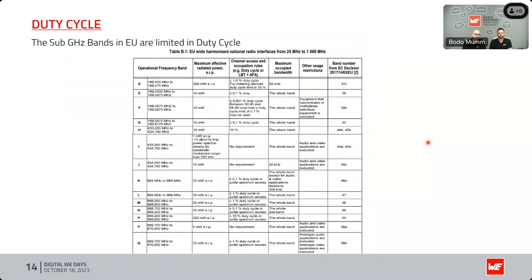Important to know: in the EU, the sub-GHz bands are limited in duty cycle. That means it is not allowed to transmit permanently or at 100% on a radio channel. This is important for developers to consider when choosing sub-GHz frequencies for their end device. They need to know which transmit power is allowed, which duty cycle applies, and what other regulations must be considered when developing their module.